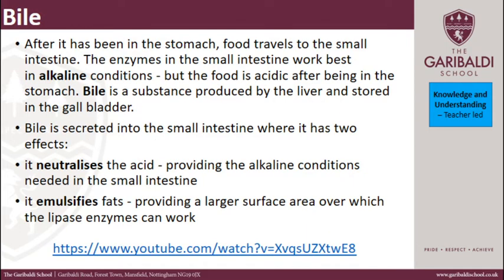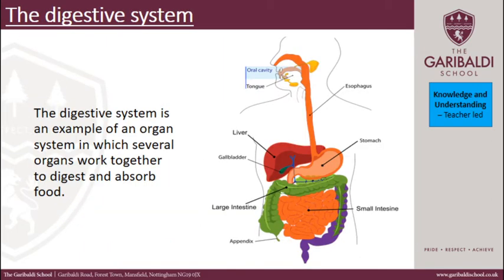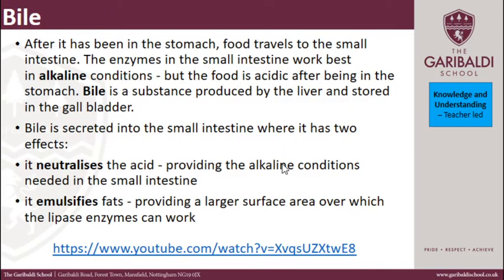Bile is a special substance produced by the liver and stored in the gallbladder. It is secreted into the small intestine and it has two very special effects. It neutralizes the acid, providing the alkaline conditions needed in the small intestine — so any acid that comes with your food from the stomach is neutralized and turned into an alkaline condition.